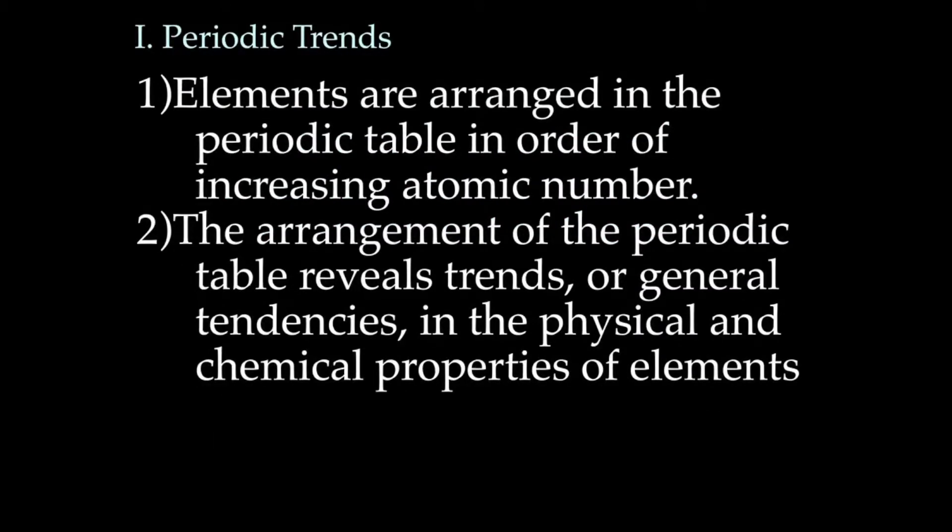Elements are arranged in the periodic table in order of increasing atomic number. That in and of itself is a periodic trend. We have hydrogen, which has atomic number of one, and then helium, lithium, beryllium, boron. The arrangement of the periodic table reveals other trends or general tendencies in the physical and chemical properties of elements.